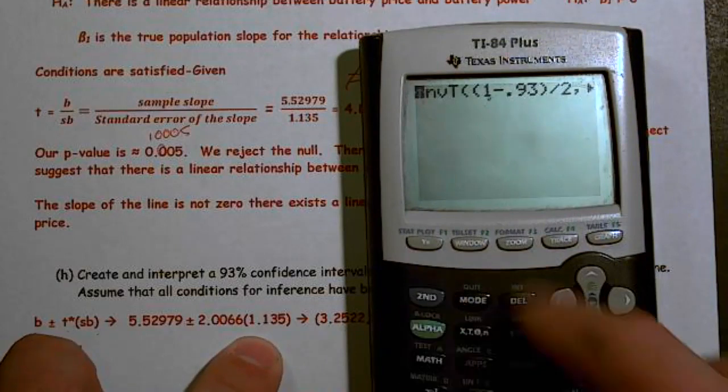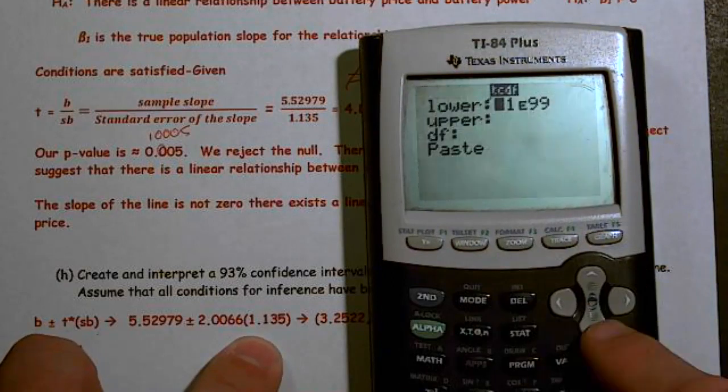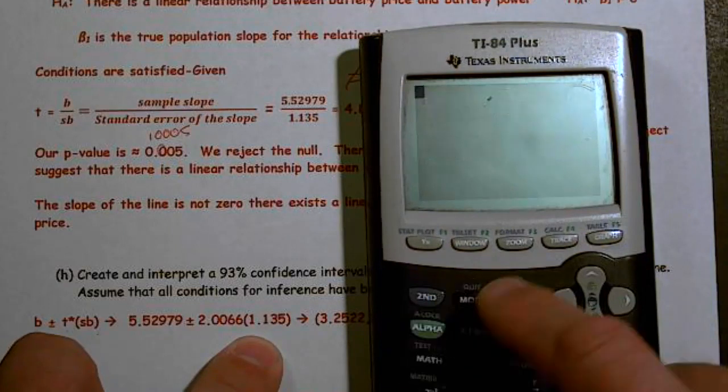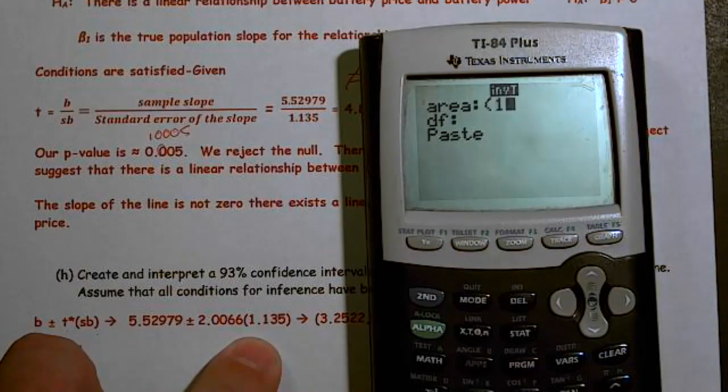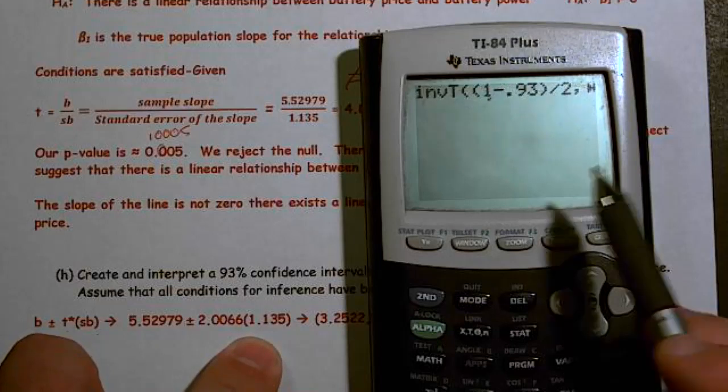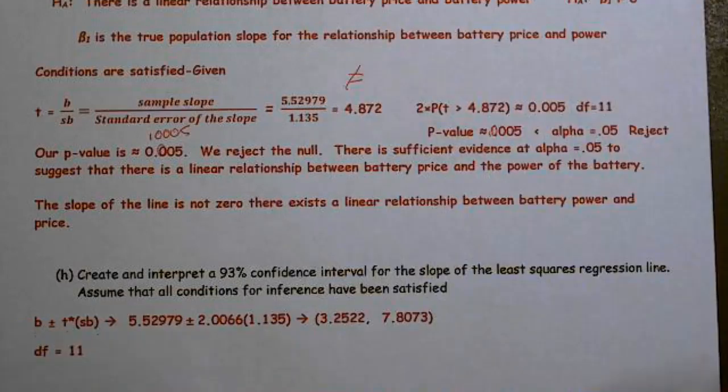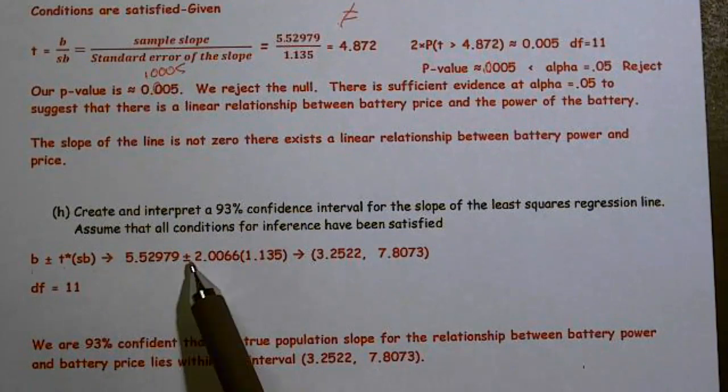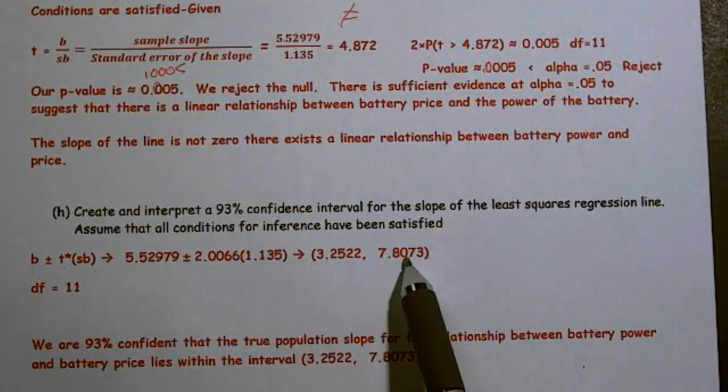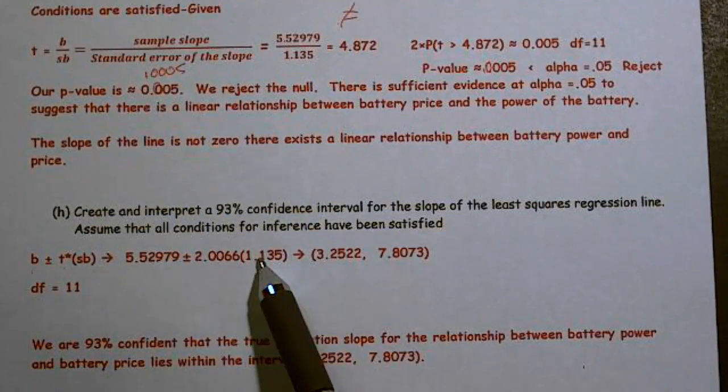Then I'm going to have to solve this by algebra. I'm going to have to go 5.57 plus this times 1.35 to give me my upper value. 5.529 minus this times that will give me my lower value. So this is my interval.